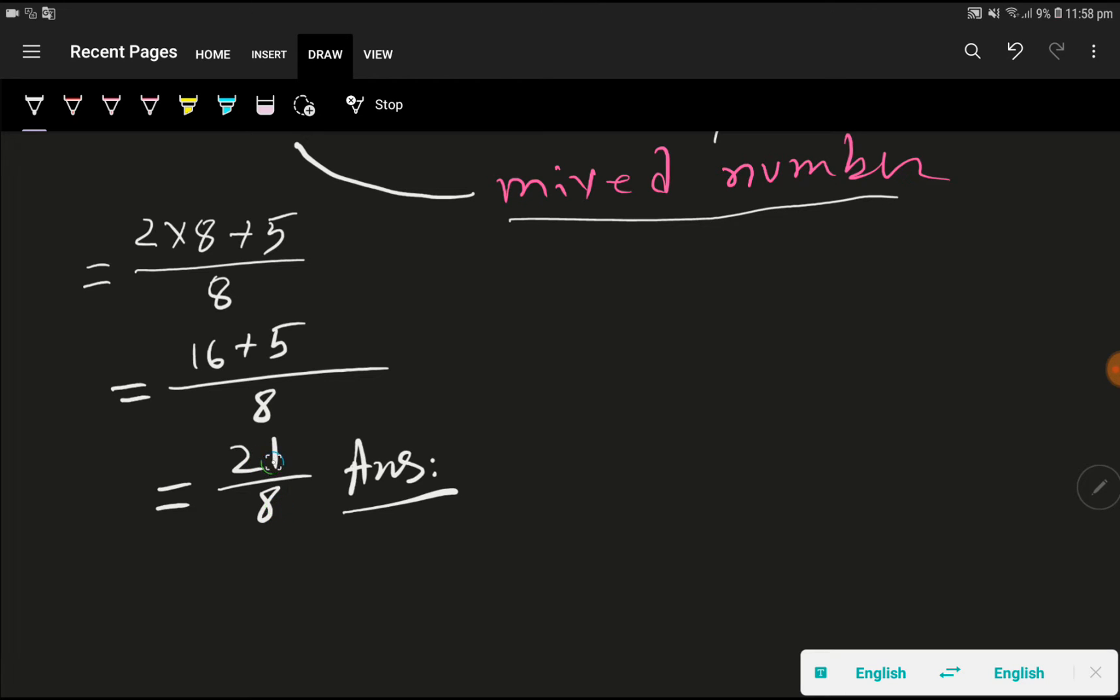This means the numerator is greater than the denominator, so this is an improper fraction. In an improper fraction, the numerator is greater than the denominator. Thank you for watching this video.